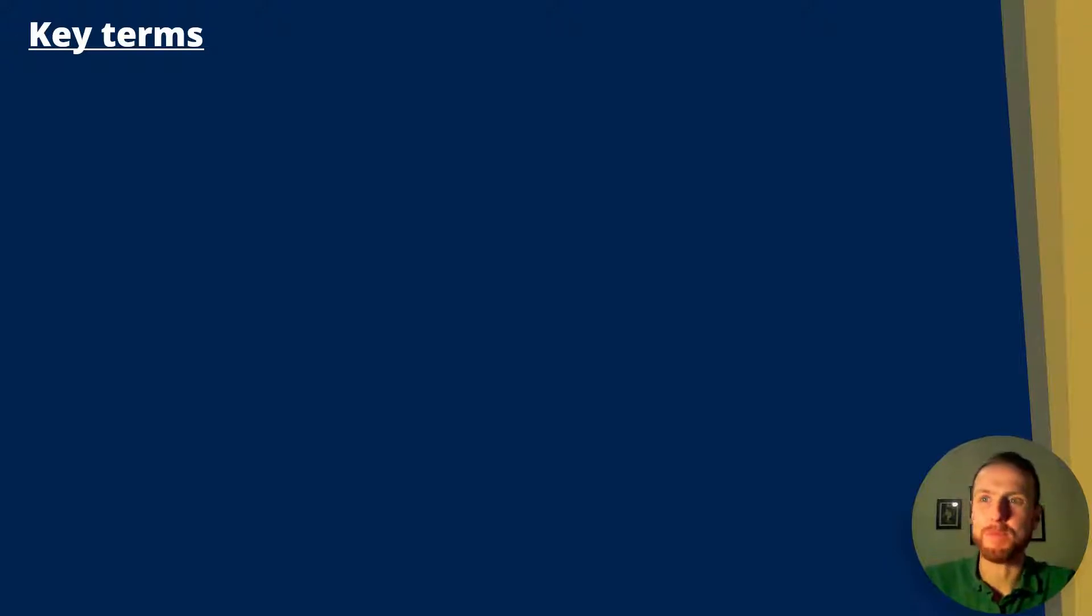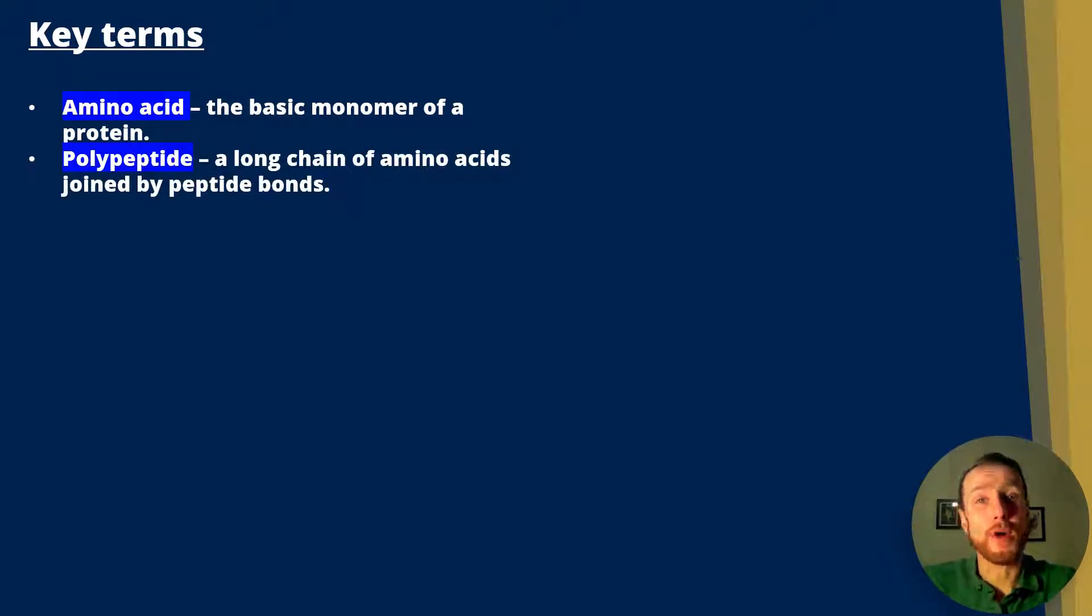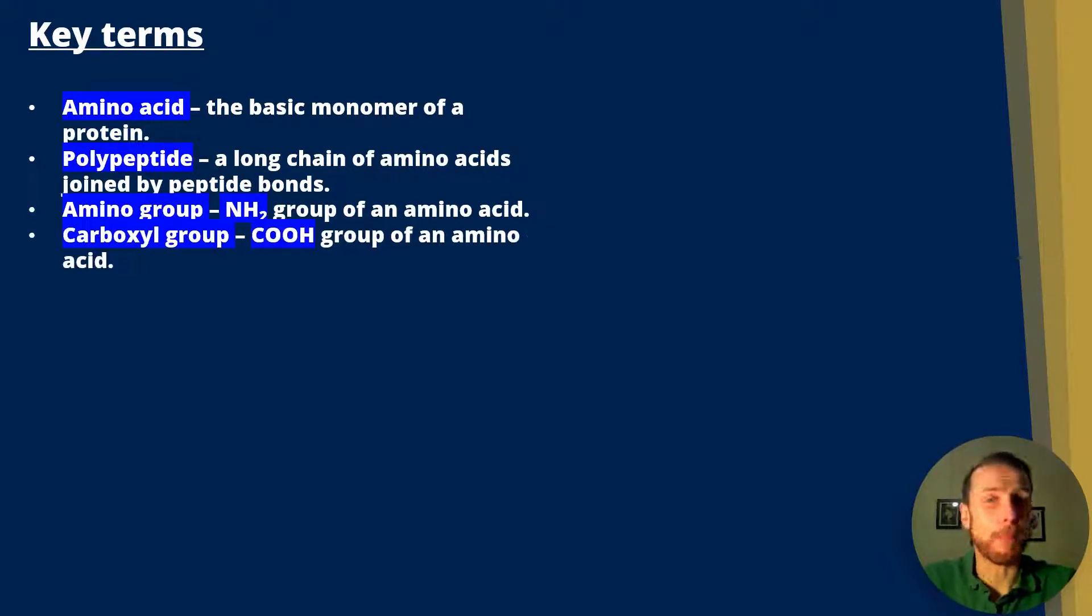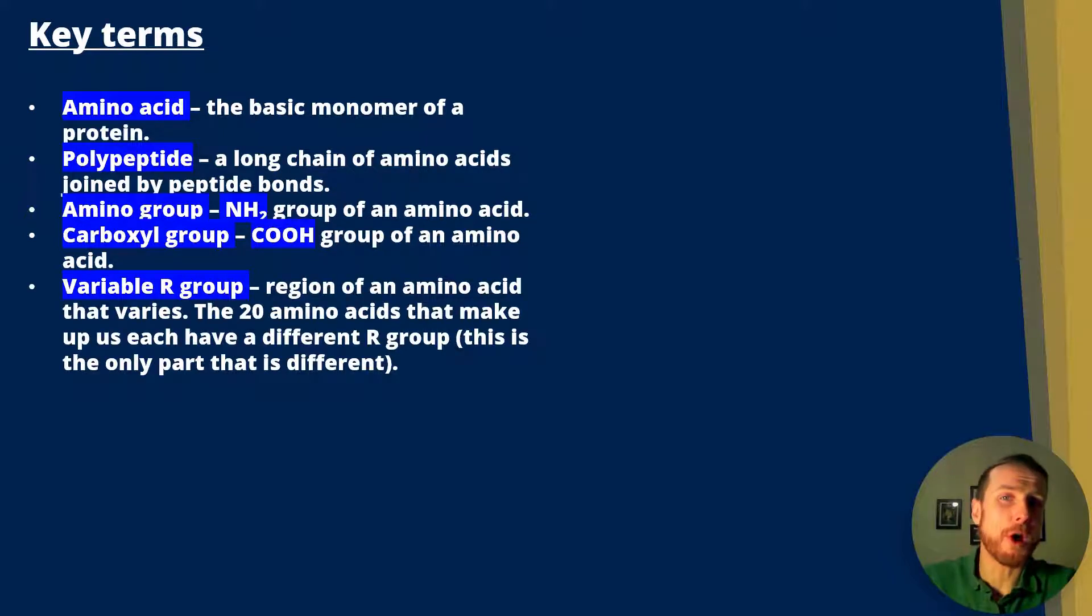Some key terms to kick off the lesson. First, an amino acid is the basic monomer of a protein. A polypeptide is a long chain of amino acids joined by peptide bonds. An amino group is the NH2 region of an amino acid. The carboxyl group is the COOH group made up of a carbon, two oxygens, and a hydrogen. The variable R group is what changes from one amino acid to the other, but the rest of the amino acid follows the same general structure.